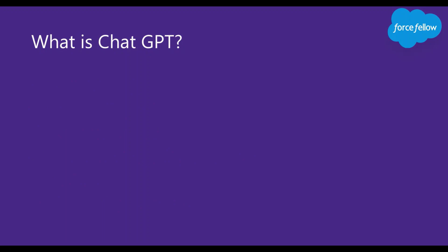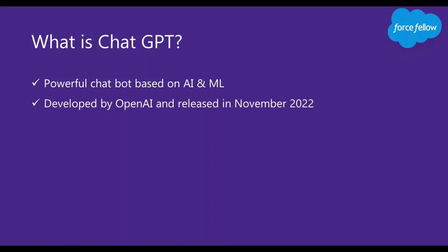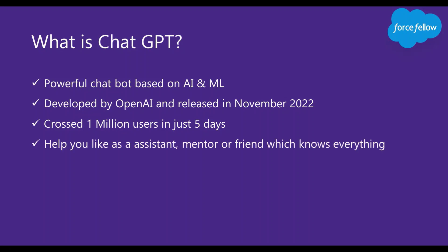So let's start with what is ChatGPT. We can say ChatGPT is a powerful chatbot based on machine learning and artificial intelligence, developed by OpenAI and released in November 2022. It became an internet sensation just after launch and crossed 1 million users in just 5 days. And it can help you like an assistant, mentor, or friend which knows everything.